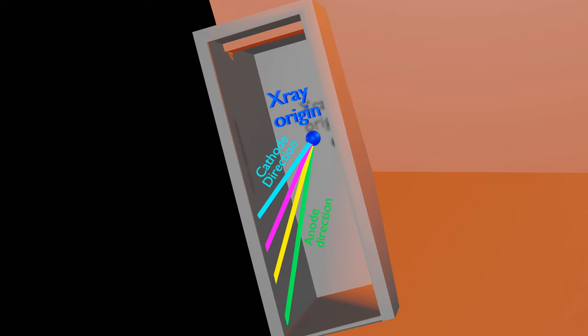Whatever may be the point of x-ray origin inside a target, it will have to overcome larger thickness along anode side than cathode side. So, we observe higher intensity along cathode direction.